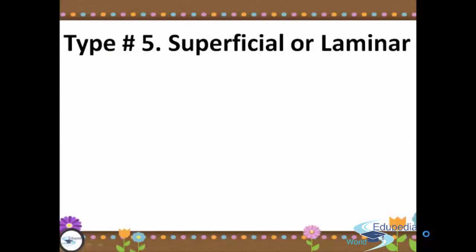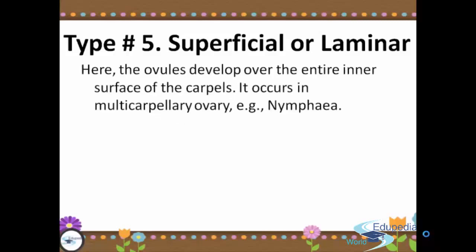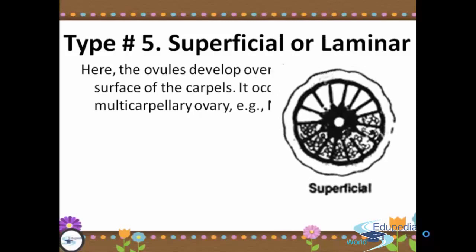The fifth type of placentation is superficial or laminar. The ovules develop over the entire inner surface of the carpals, and it occurs in multicarpillary ovary. Here we have the picture of superficial or laminar placentation.